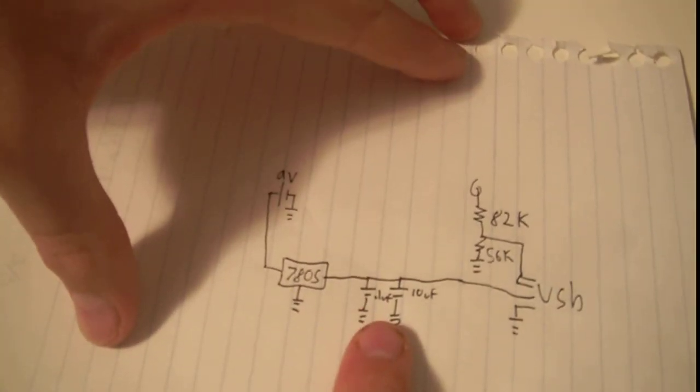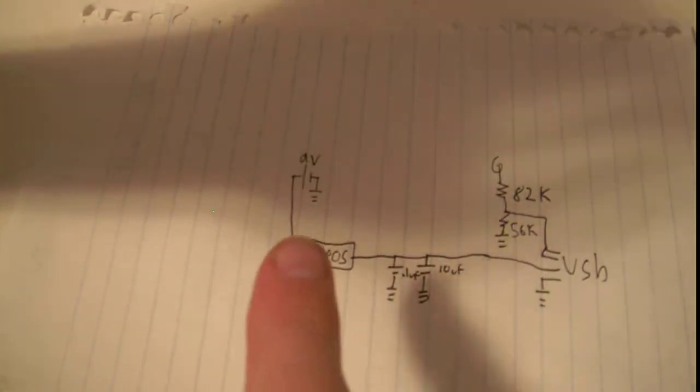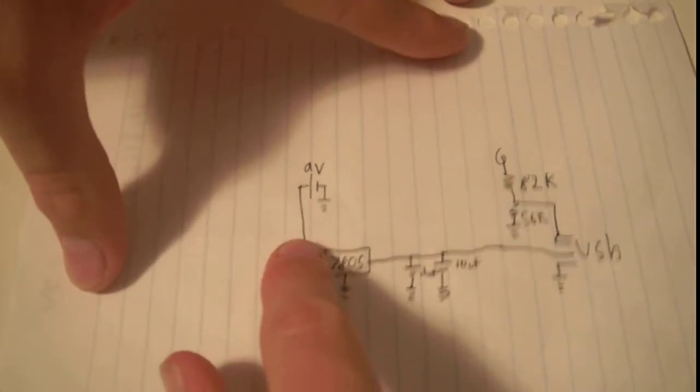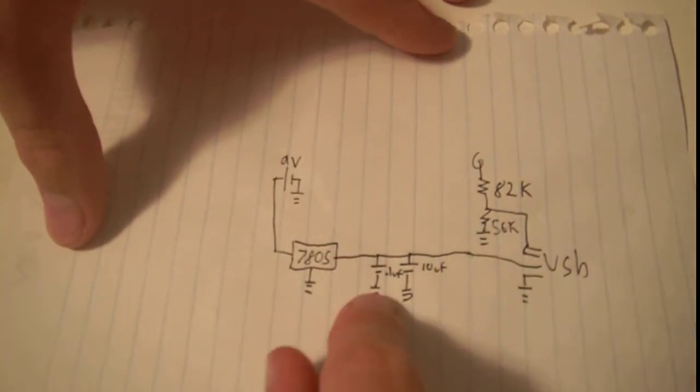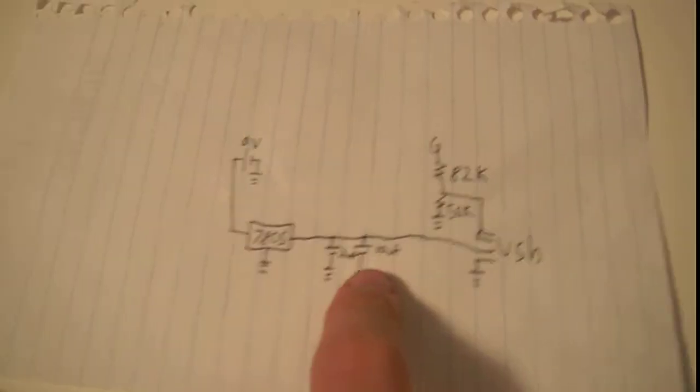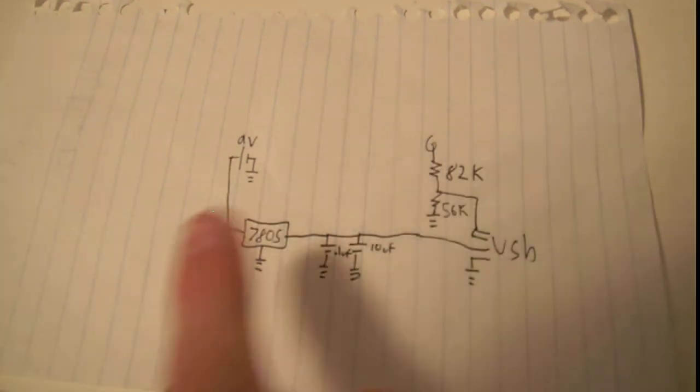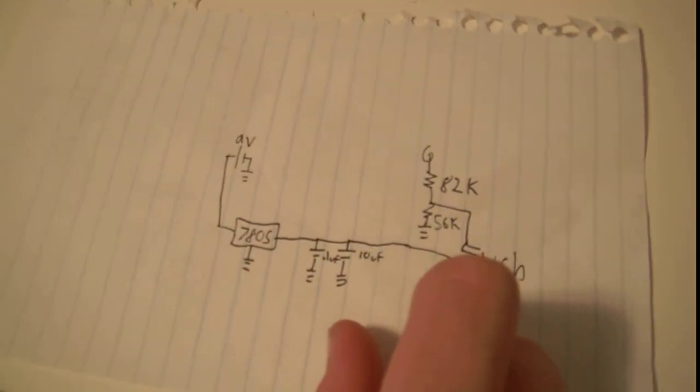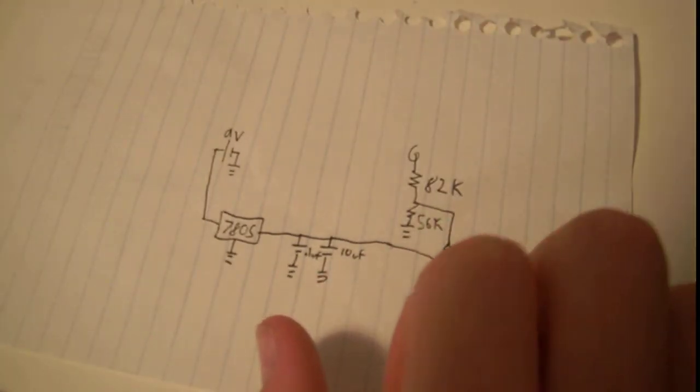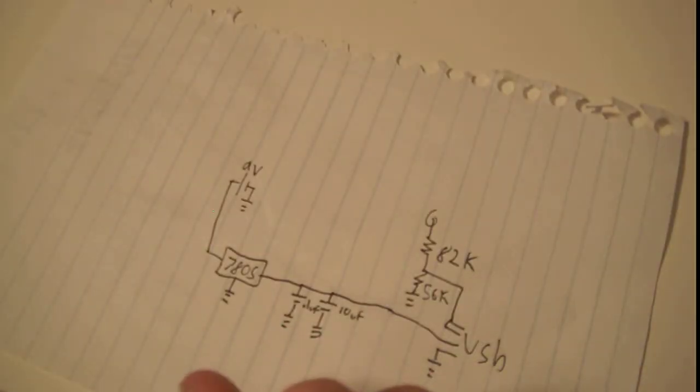So, you all have presumably watched my voltage regulator tutorial, or, if not, are familiar enough with voltage regulators to know how they work. So, this regulates the 9 volts down to the 5 volts. We have two filter caps here, a 0.1 microfarad and a 10 microfarad. These ensure that the power going to the iPod is nice and clean. Very important. Then, this is the USB connector here. As you can see, the 5 volts and the ground are connected to the USB connector.